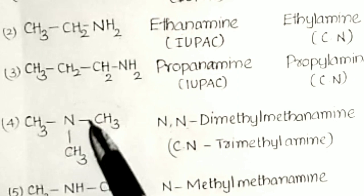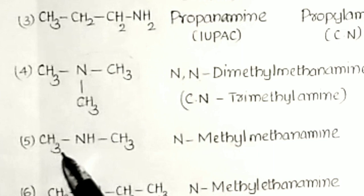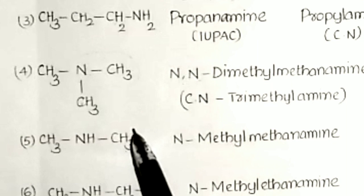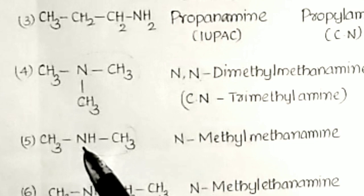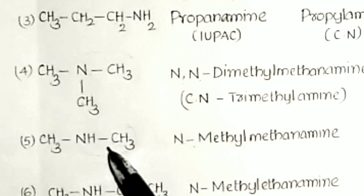For CH3NHCH3, one carbon atom with the amino functional group is taken as the parent, and the other methyl group is the substituent. We write N-methyl methanamine.